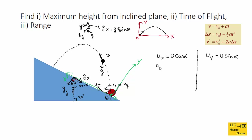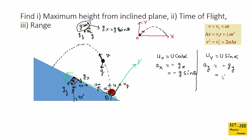Let's make a table for x and y components. The acceleration in the horizontal direction, ax, equals gx but in the opposite direction of the x-axis, so ax = -g sin theta. The acceleration in the vertical direction, ay, equals -gy, which is -g cos theta.